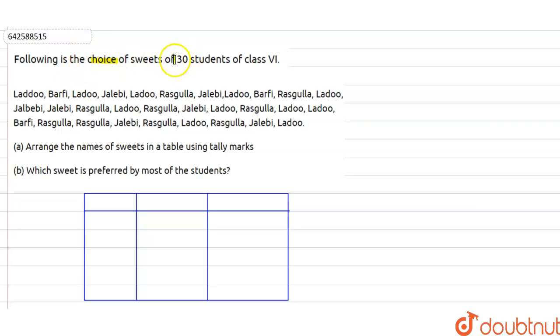...is the choice of sweets of 30 students of class 6. The data is given to us. First part is arrange the names of the sweet in a table using tally marks. Second, which sweet is preferred by most of the students?